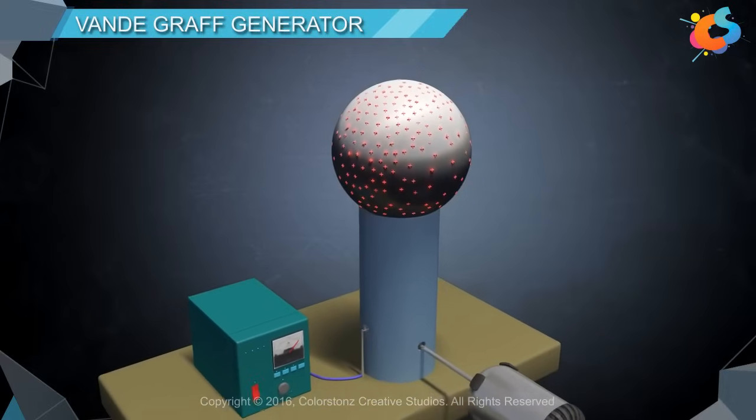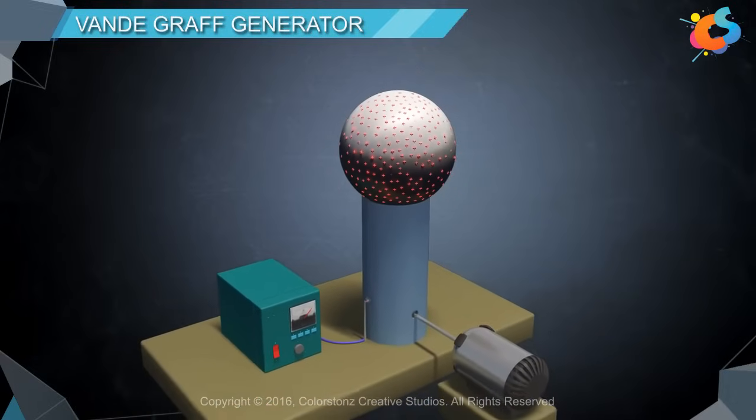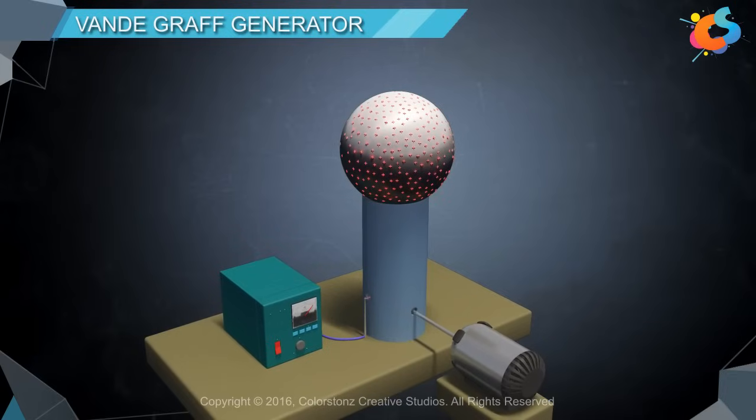Since the belt continuously carries positive charge to the receiver comb, the spherical shell collects an enormous amount of charges and develops huge potential.